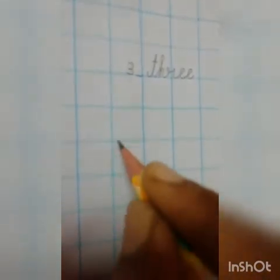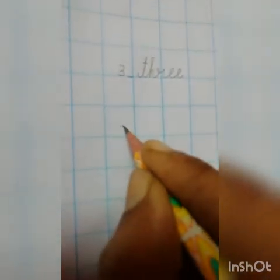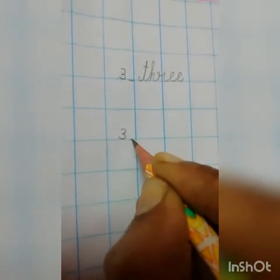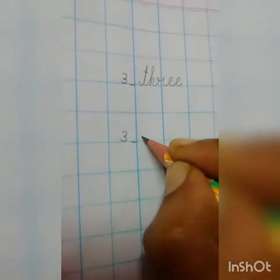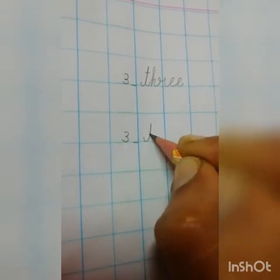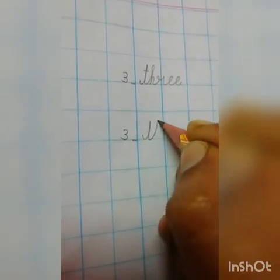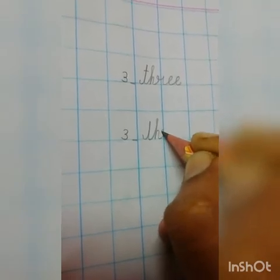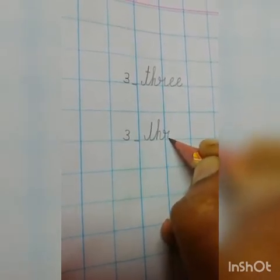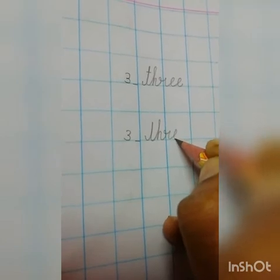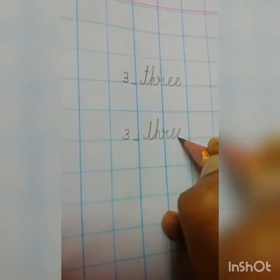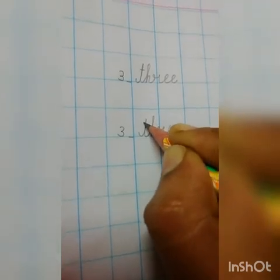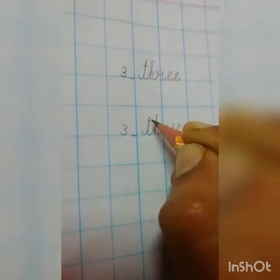Leave one line. Write in the next box. T, H, R, E, E. 3. Now take your hand. Draw one small sleeping line for T.